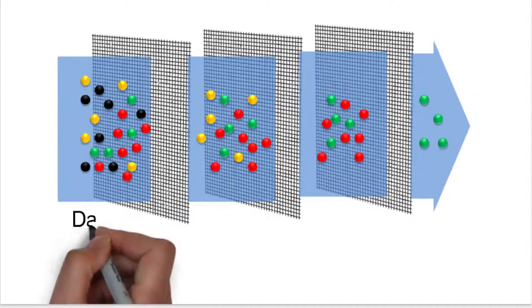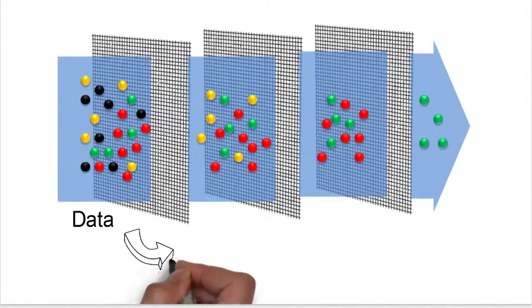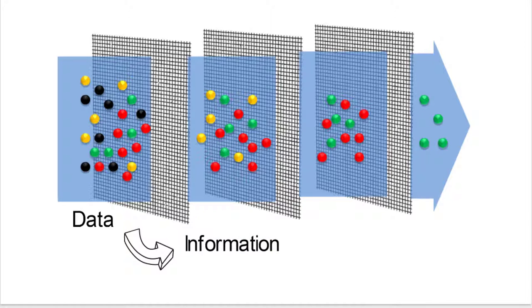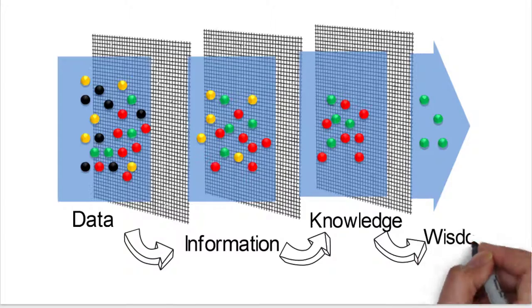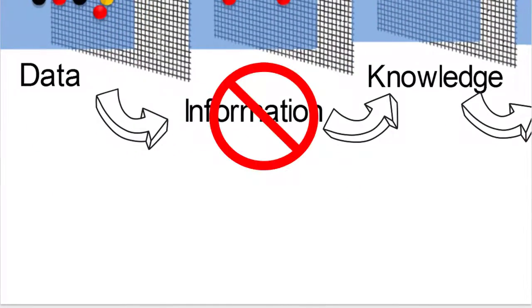He also talks about the fact that in the past, what we said is there's a whole lot of data out there, that data then man transforms into information, that information gets updated into knowledge, and then the knowledge gets updated into wisdom. And that's how it works.